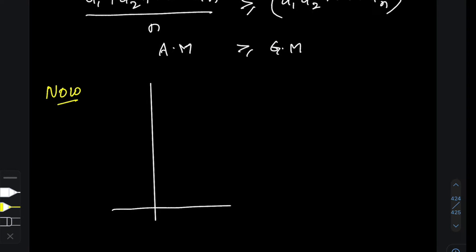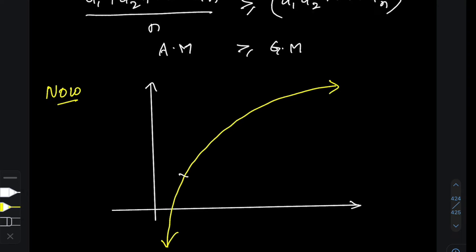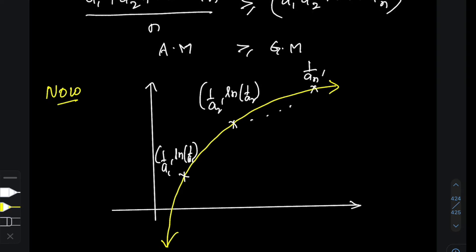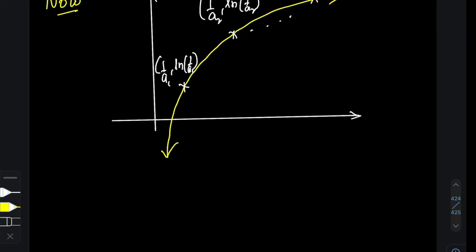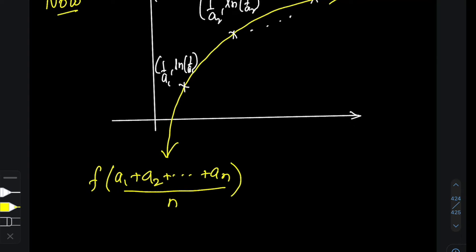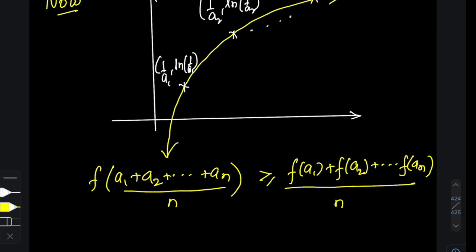This is just half the proof — I also have to prove that GM ≥ HM. Using the same log function and the same concave-down inequality, this time I'll choose my points to be (1/a₁, ln(1/a₁)), (1/a₂, ln(1/a₂)), and so on until (1/aₙ, ln(1/aₙ)). Since the curve is still concave downwards, I can apply the same inequality: f of the mean of inputs ≥ mean of f values.